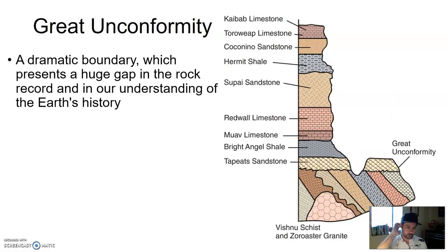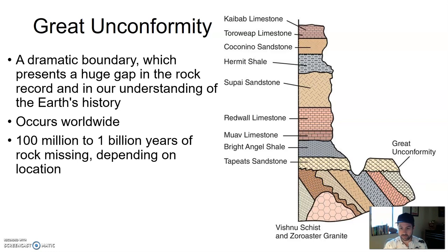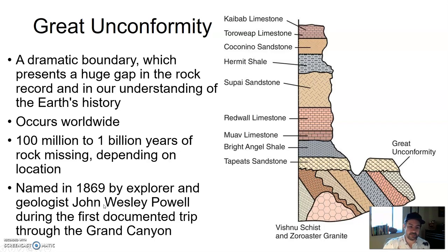The Great Unconformity is a dramatic boundary that presents a huge gap in the rock record and our understanding of Earth's history. It actually occurs worldwide — depending on where you are, there's a hundred million to up to a billion years of rock missing. Scientists are still trying to figure out why. Recent reading suggests it may have involved worldwide glaciers grinding down the Earth over vast areas, but nothing is confirmed for sure. It was named in 1869 by John Wesley Powell during his first documented trip through the Grand Canyon.